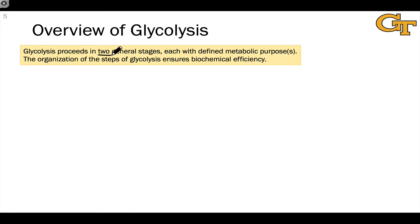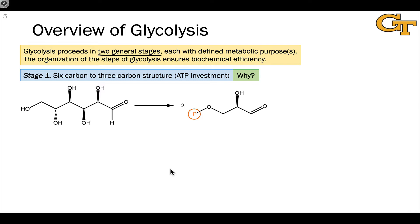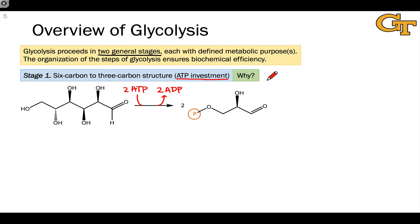Let's take a look at the individual steps of glycolysis from a bird's eye view. There are two general stages involved in glycolysis, each with a well-defined metabolic purpose, and the way the steps are organized ensures biochemical efficiency. In stage one, the six-carbon glucose is broken down into two three-carbon units, and this stage requires an investment of two molecules of ATP. Because of this ATP investment, the first stage is sometimes called the investment phase.